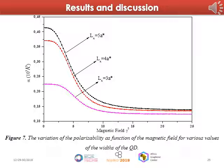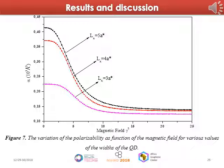In figure seven, we present the variation of the polarizability as a function of the magnetic field strength squared, gamma-squared, for three different values of the size of the box. We notice that the magnetic field reduces the polarizability. Its effect is more important for large values of the quantum box (L equal 4 and 5), which confines the electron in the box by increasing its binding energy. For small quantum dots, the polarizability is almost independent of the magnetic field. Our results are in good agreement with the literature.